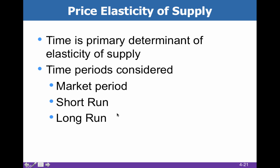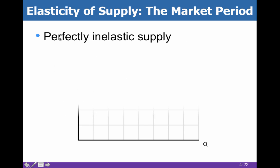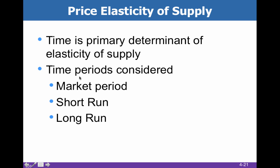The determinants of supply are very simple. There's really only one, and that one determinant is time — it's all about the time that they have to react. We look at three different time periods: the market period, the short run, and the long run.